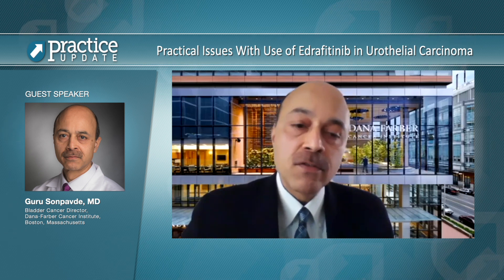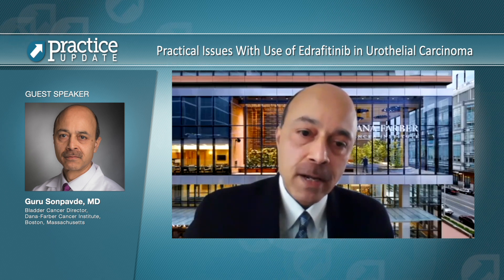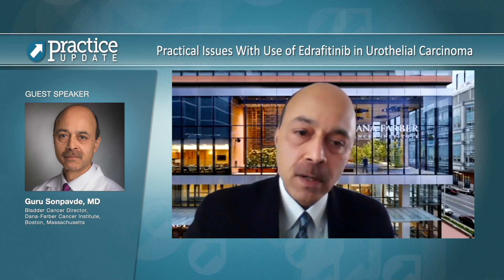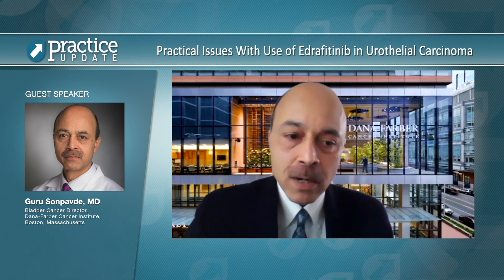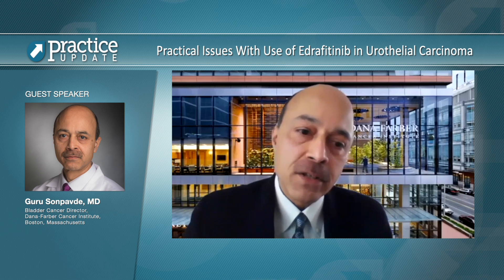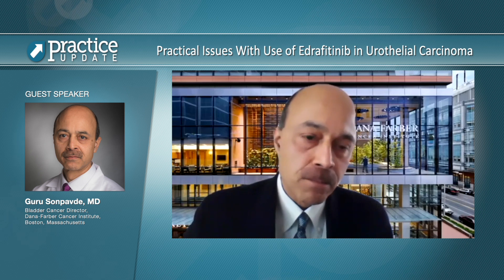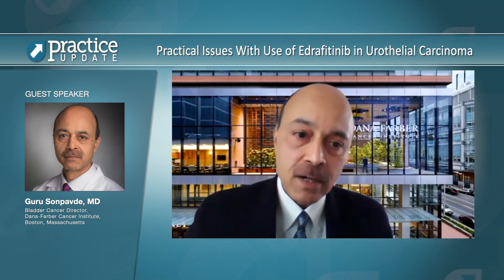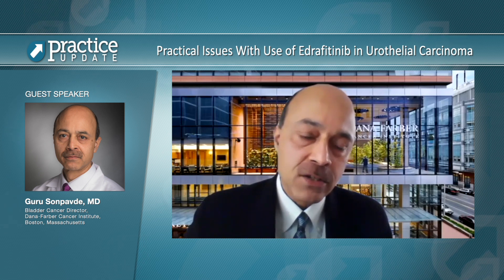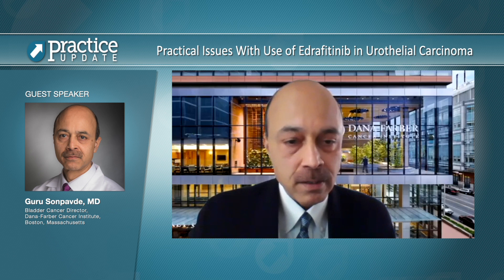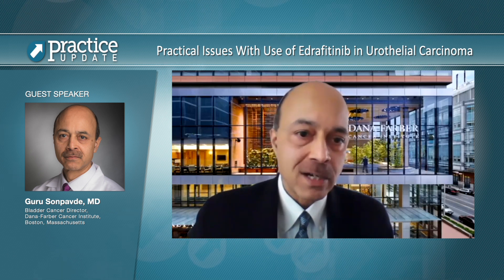When the drug was approved, they did approve a companion assay using the Qiagen RT-PCR assay that detects the fusion or mutation based on RNA from the tumor. However, it is also true that you can identify these alterations based on other platforms such as Foundation Medicine. We have our own in-house panel at Dana-Farber, so there are several other platforms available that can detect these alterations. However, the one that the trial investigators used and was approved by the FDA as a companion assay was the Qiagen therascreen assay.